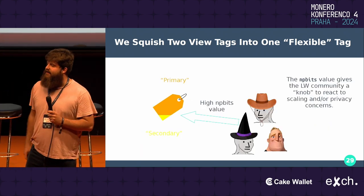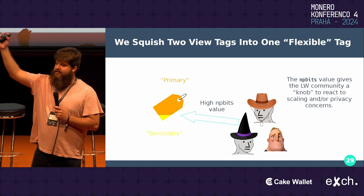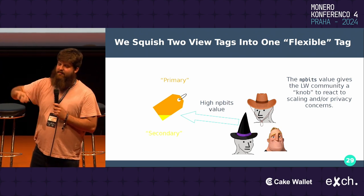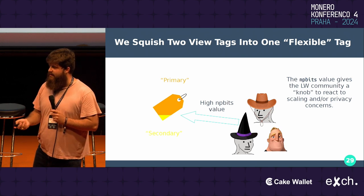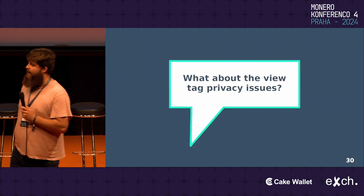A high NP bits value means the primary view tag is going to be very large, and that means we get to crunch down on the scanning quite a bit. Having this knob to change the mixing gives us a little flexibility. High NP bits value means lots of crunching down on scanning, worse for anonymity, but now you can make that trade-off — whereas before you were not able to.